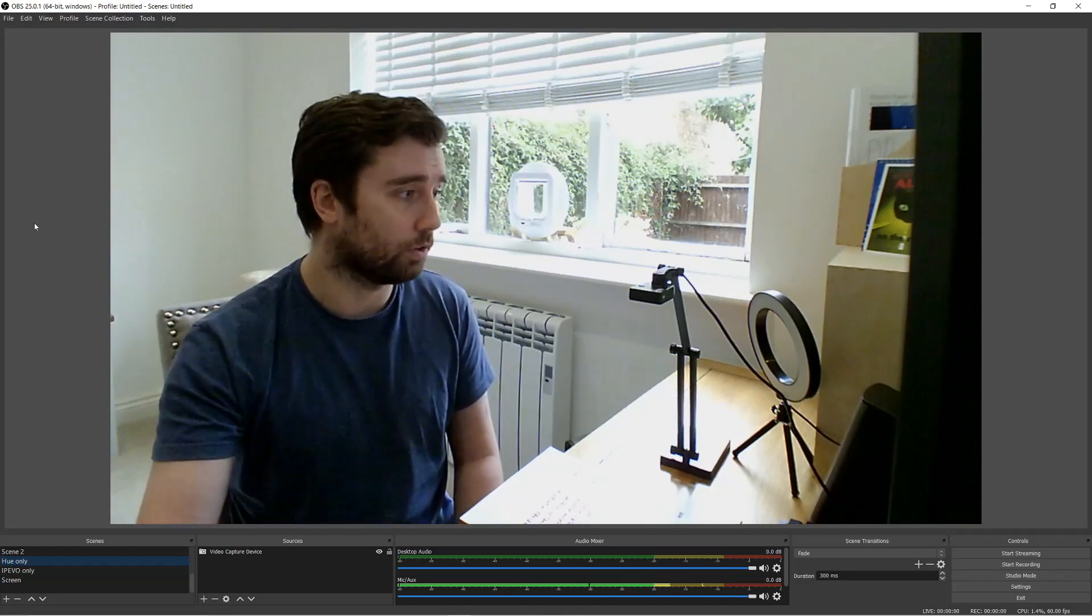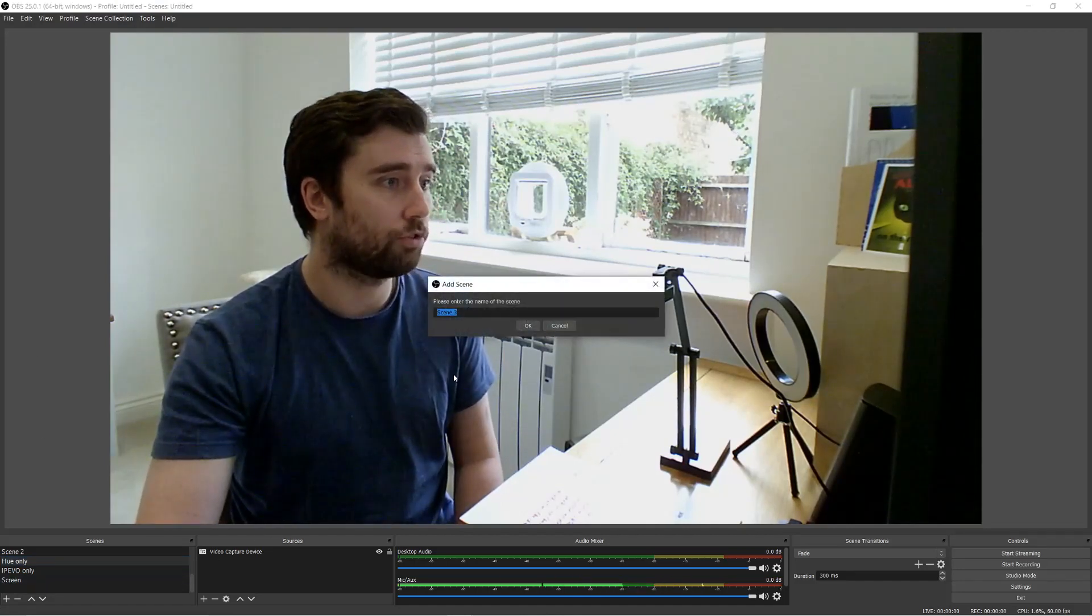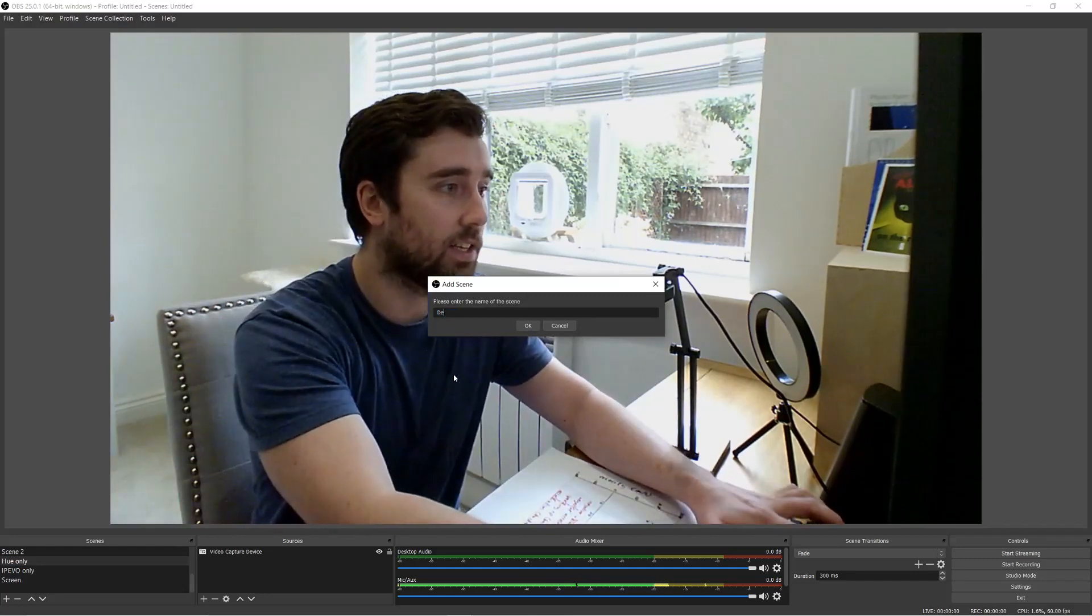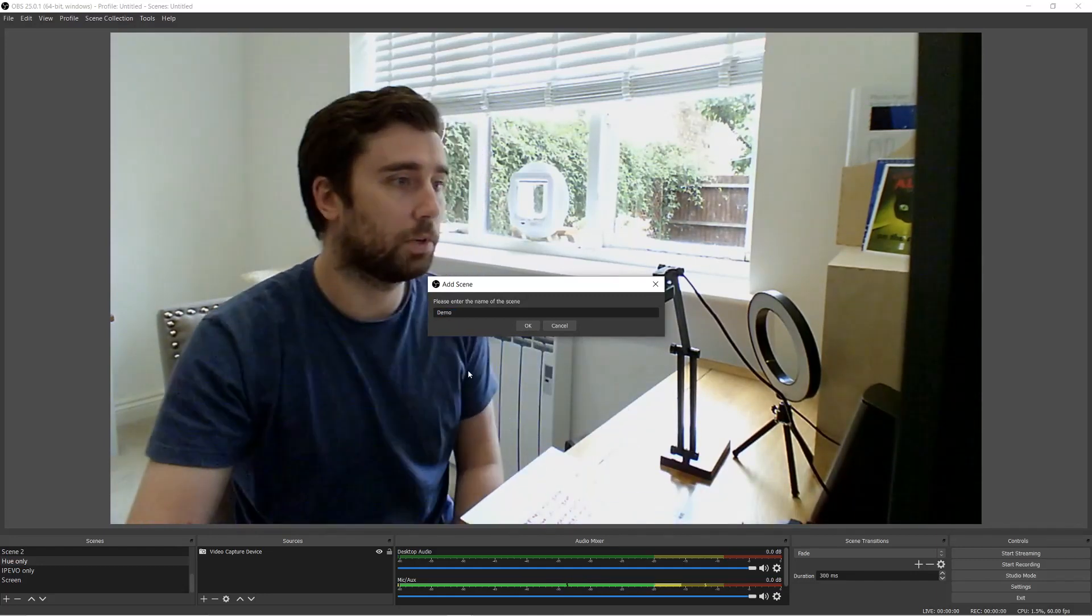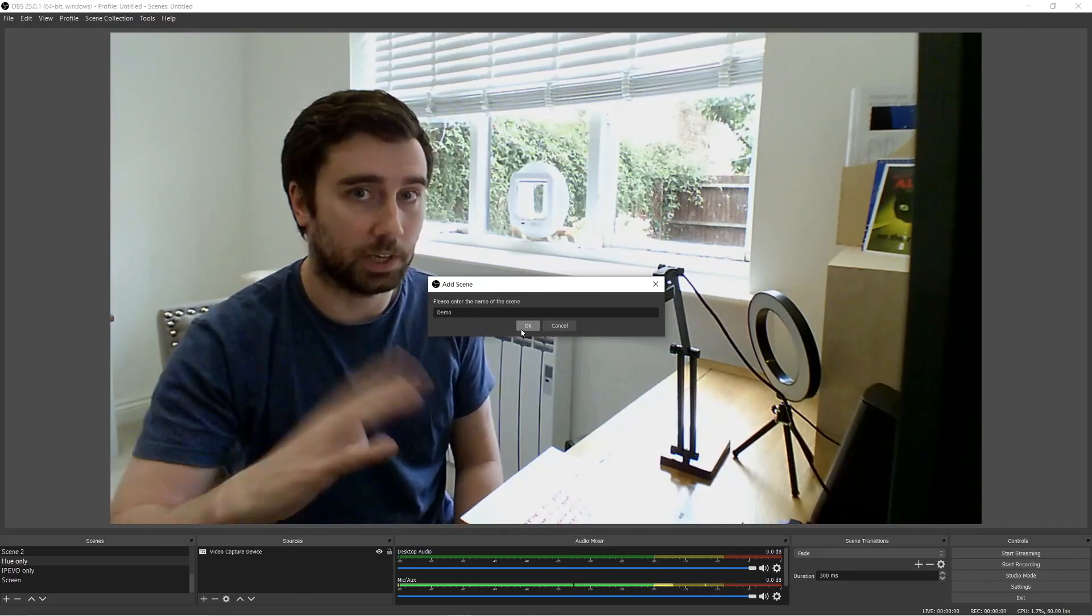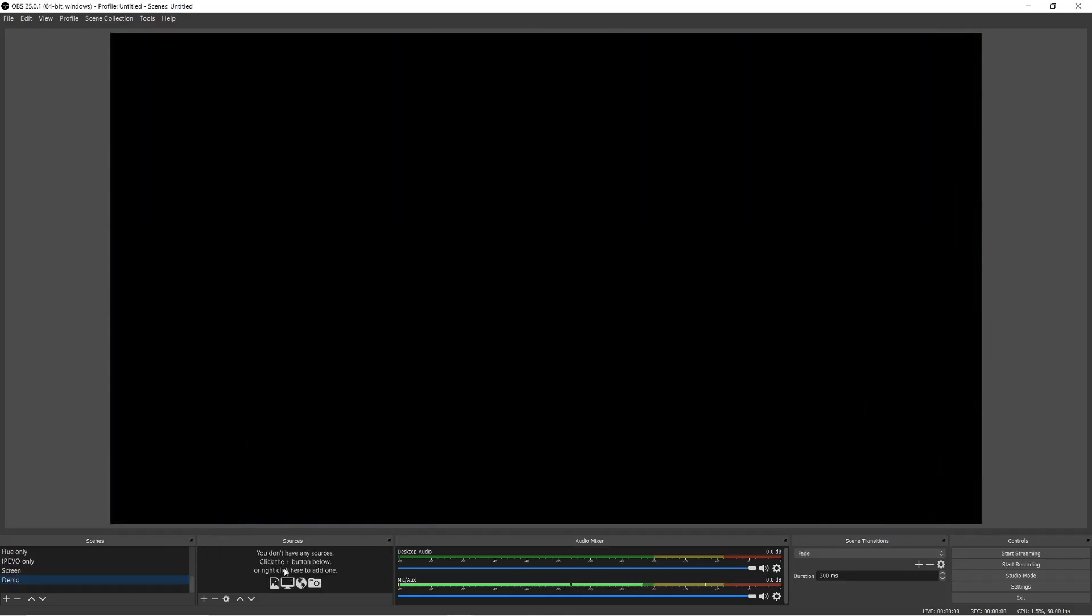And so what you need to do first of all is you need to create a scene. I'm just gonna call it demo just for the time being and the screen is gonna go blank just because I'm swapping to a new scene. And then what you need to do is you need to add different sources to the scene.